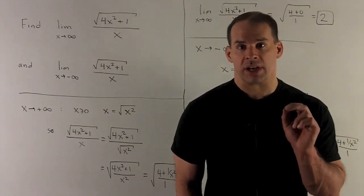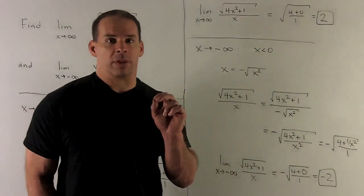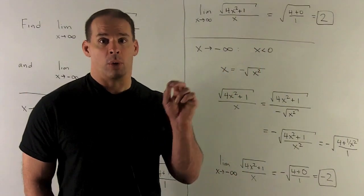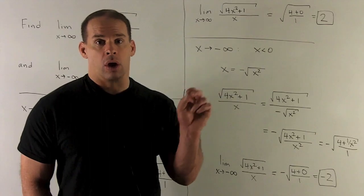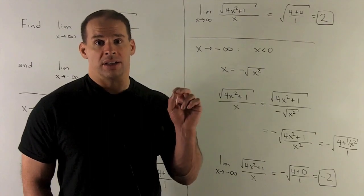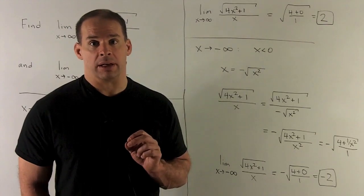I take my limit. What's going to happen? We're just going to be left with 4 plus 0. 1 over x squared goes to 0, all over 1, or take the square root of 4, and that gives me my limit of 2.